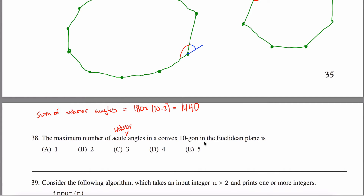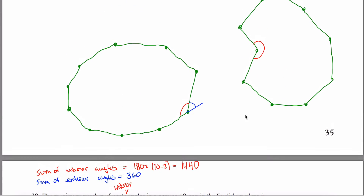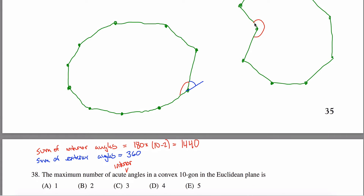Maybe easier to deal with is the sum of the exterior angles. It turns out the sum of the exterior angles is always 360 degrees — it doesn't matter how many sides you have, whether it's a decagon, a triangle, or a 55-gon. It doesn't matter if it's convex or concave, though for concave shapes some exterior angles are negative. But they still sum to 360 degrees, and this is certainly true for any convex shape like we have here.